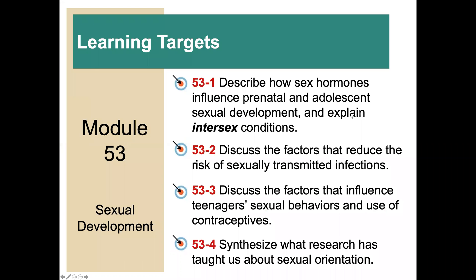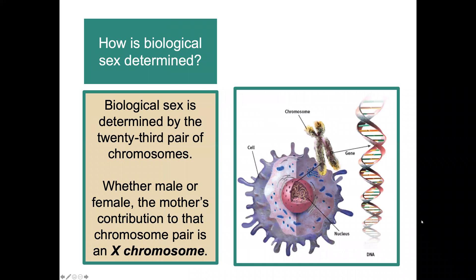The learning targets for this module about sexual development are: to describe how sex hormones influence prenatal and adolescent sexual development and explain intersex conditions; to discuss the factors that reduce the risk of sexually transmitted infections; to discuss the factors that influence teenagers' sexual behavior and use of contraceptives; and finally to synthesize what research has taught us about sexual orientation.